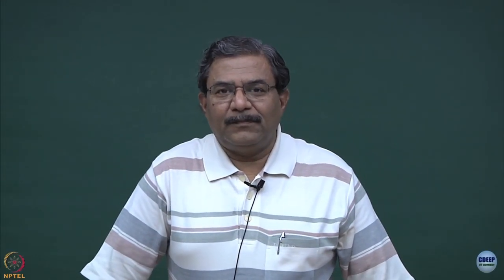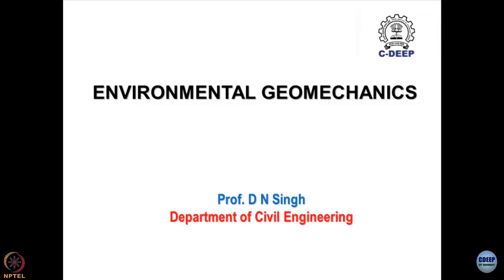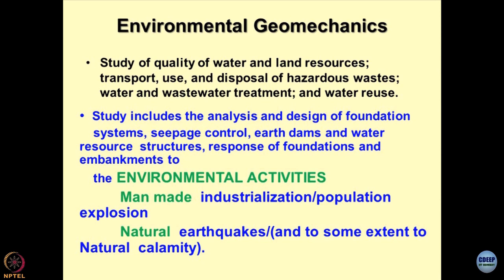We have been talking about a general introduction to environmental geomechanics. Summing up what has been discussed, environmental geomechanics is a branch of engineering and technology where we mainly study the quality of water and land resources, as these are the basic requirements for the sustenance of life. We always try to find an optimal solution between different constraints, and another activity environmental geotechnologies are involved in is the transport, use, and disposal of hazardous waste.